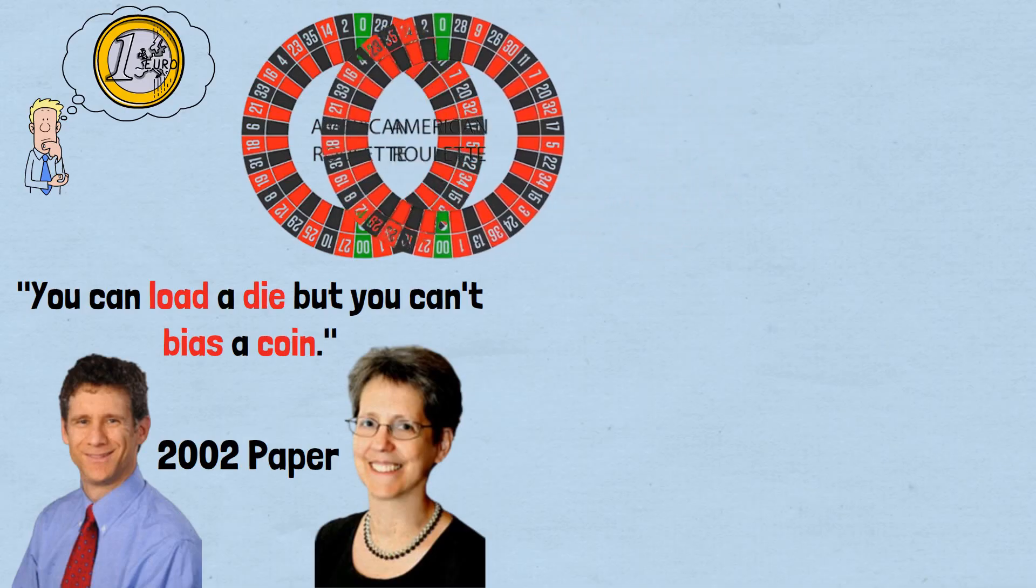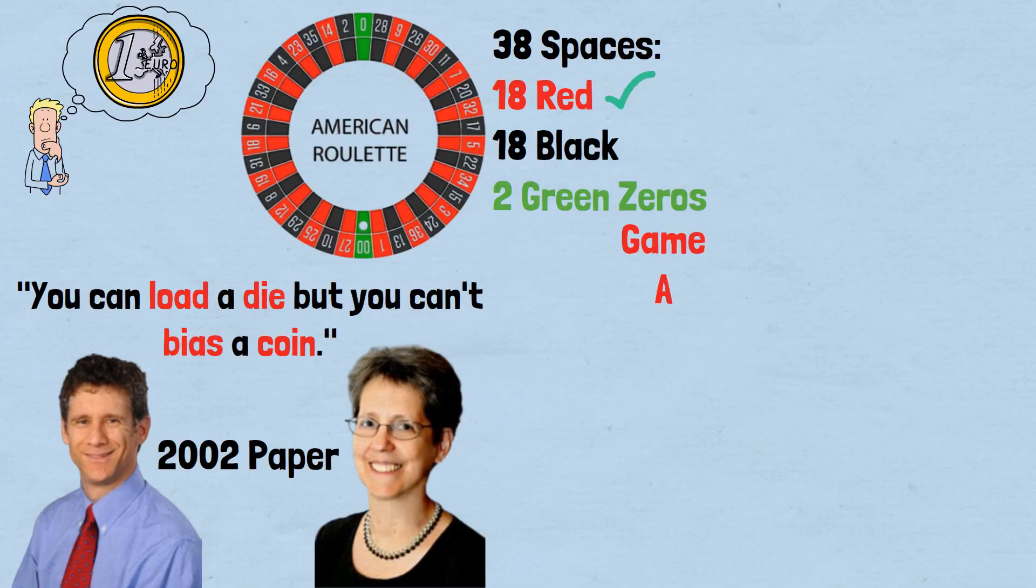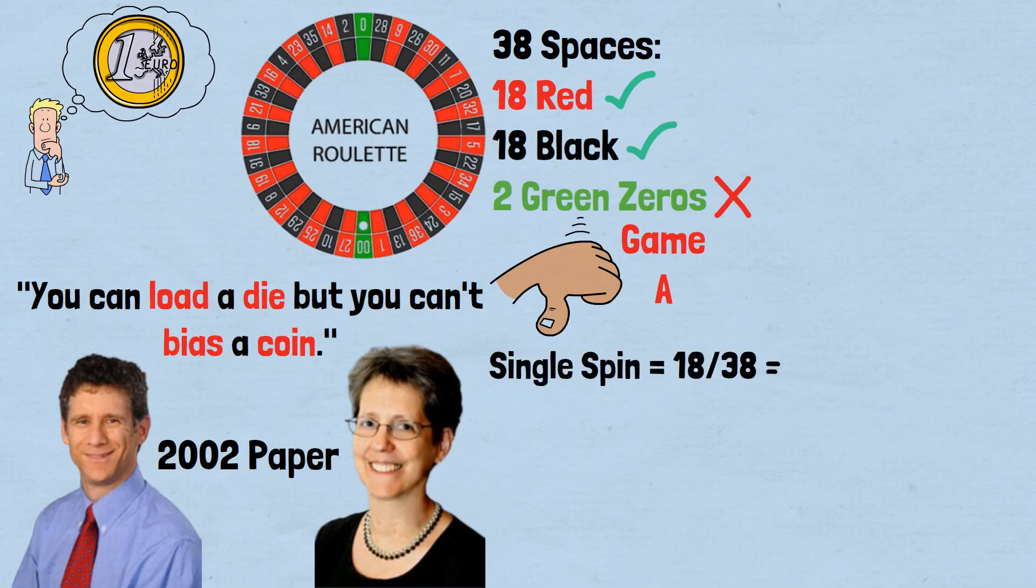Game A operates like a standard roulette game with a twist: an American roulette wheel with 38 spaces—18 red, 18 black, and two green zeros. But in Game A, you can only bet on red or black, never on green. This restriction creates a subtle but crucial disadvantage.